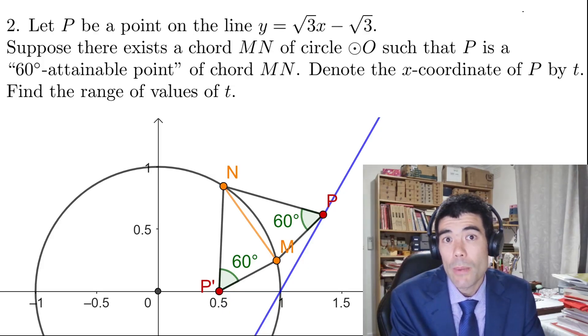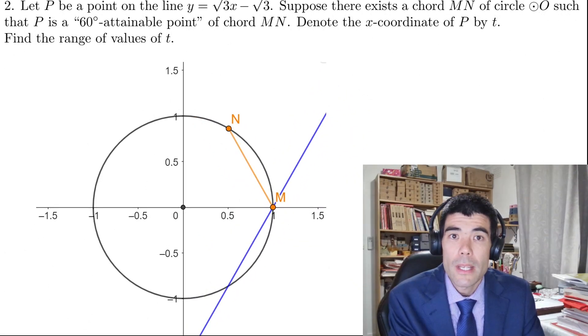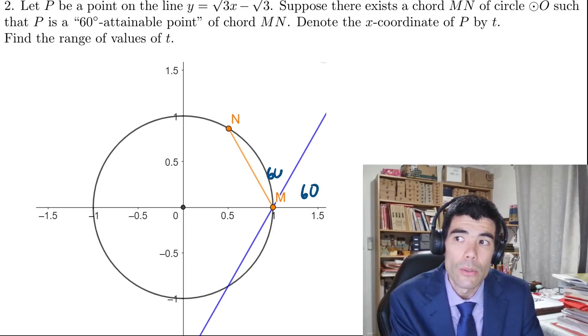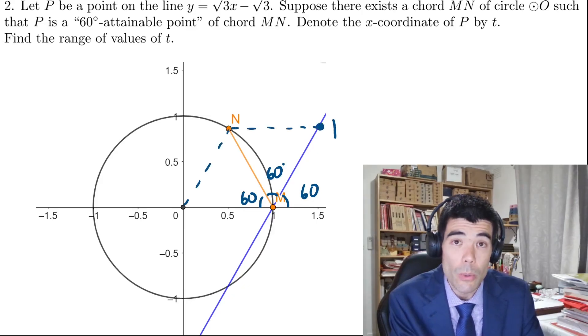So it's kind of similar to part 1b where we had to find the maximum possible x coordinate. Here we want both the minimum and the maximum. One thing that appears to be useful is that the line root 3x minus root 3 is already at a 60 degree angle to the x axis. So if we place chord MN another 60 degrees around, what we can do is form these equilateral triangles and then point P will be on our line and its reflection would be the origin.